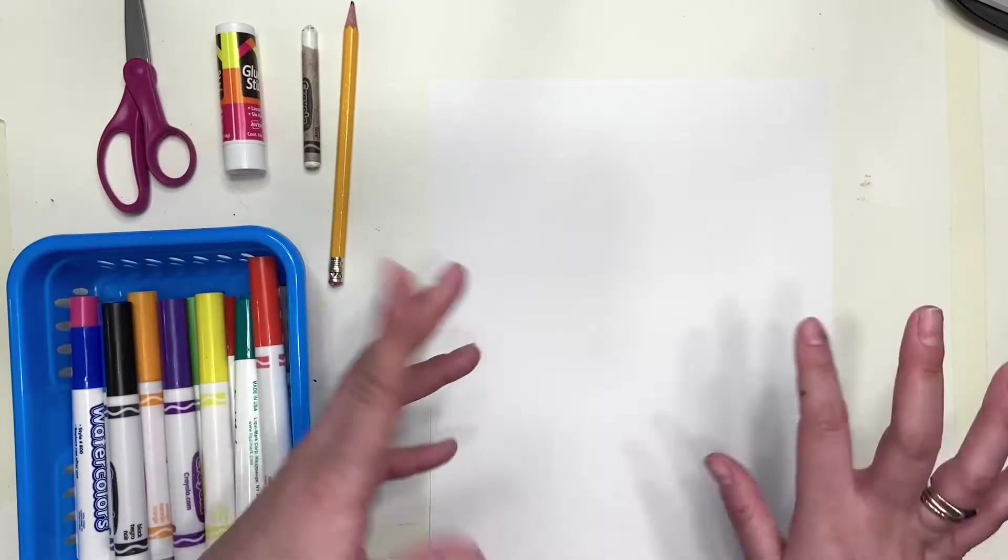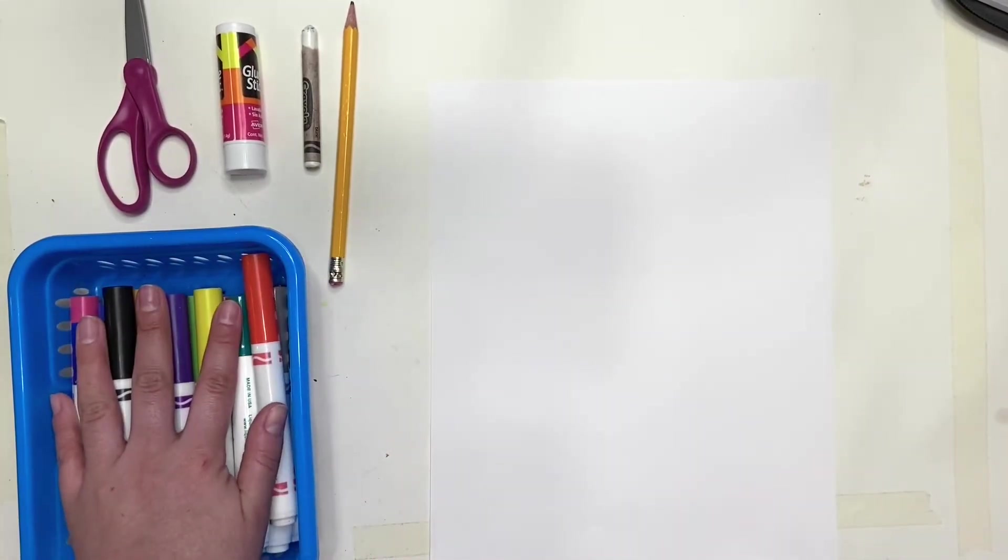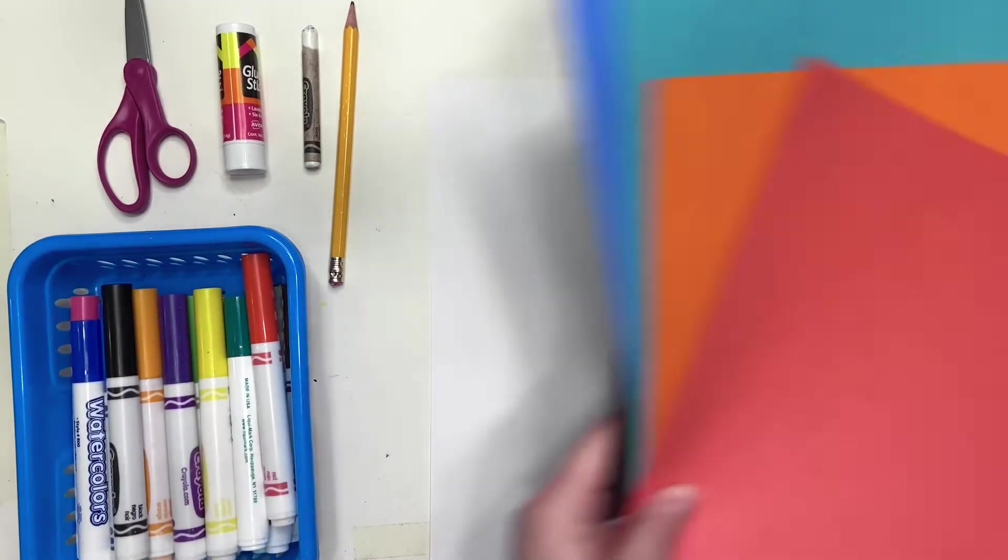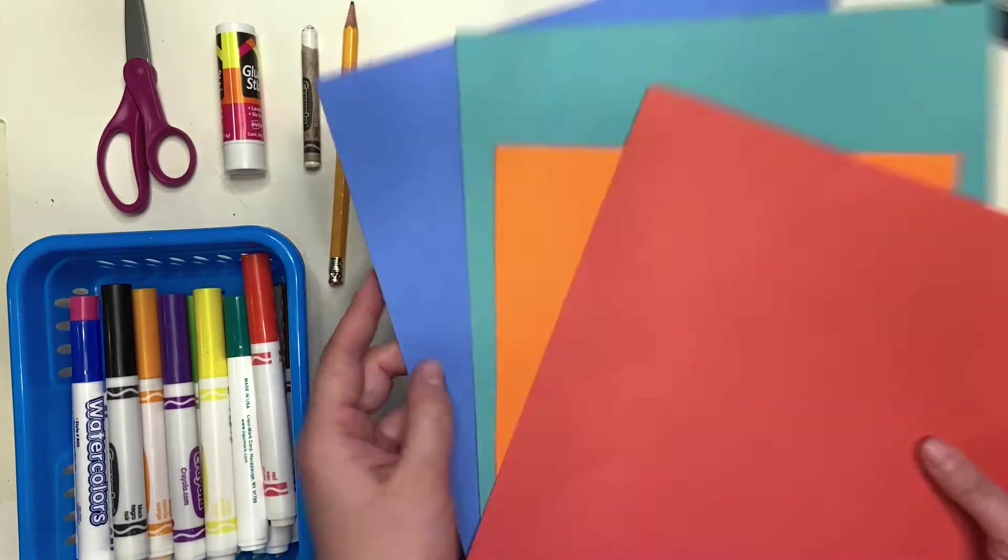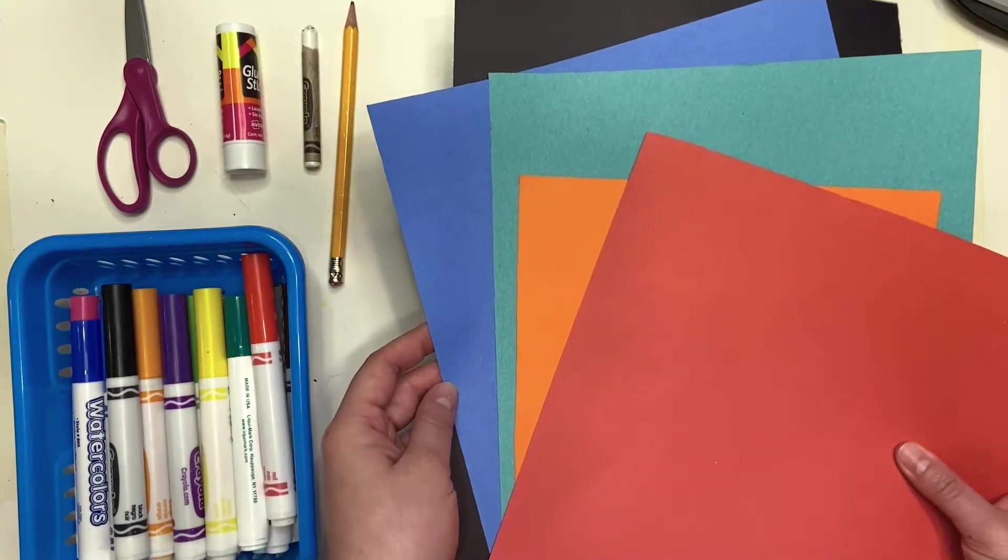So it's really just a question of whether you're going to use markers to get the silhouette and outline, or whether you're going to use colored paper. I'm going to show you how to do both. Let's get started.